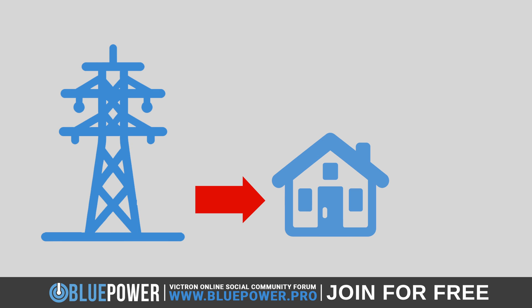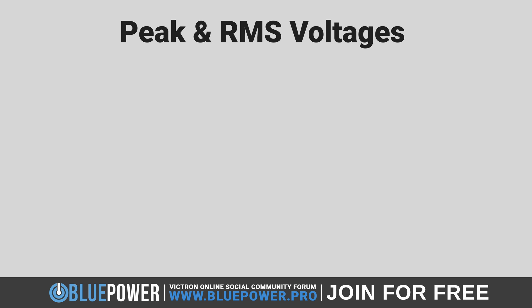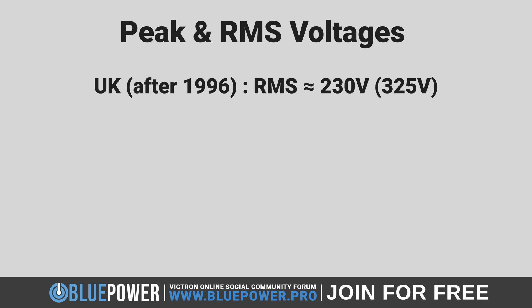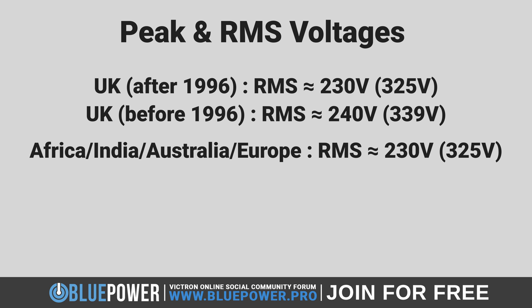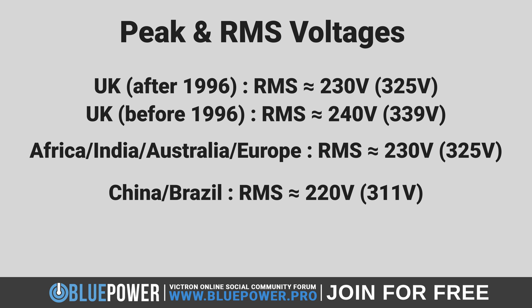When we talk about the electricity supplied to our homes or devices, we often refer to the RMS voltage — most familiar from plug sockets and multimeter readings. For the UK, after voltage harmonization in 1996, the RMS voltage is officially 230 volts, corresponding to a peak voltage of around 325 volts. However, due to historical standards and allowed tolerances, some locations in the UK may still experience voltages closer to 240 volts RMS, leading to a potential peak of about 339 volts. The same peak voltage of 325 volts applies to most other countries using 230 volts RMS, including Africa, India, Australia, and Europe. In China and some parts of Brazil, where the standard RMS voltage is 220 volts, the peak voltage would be approximately 311 volts.